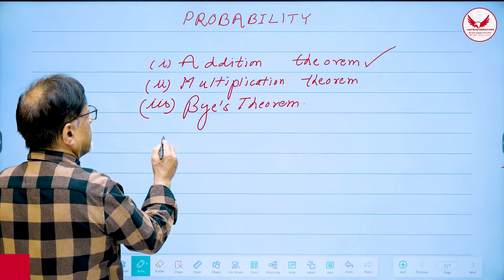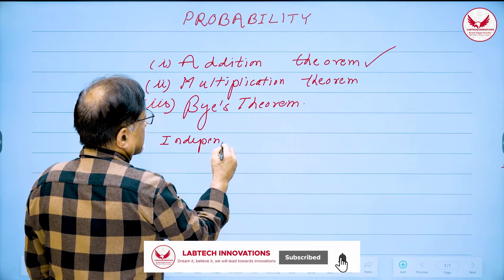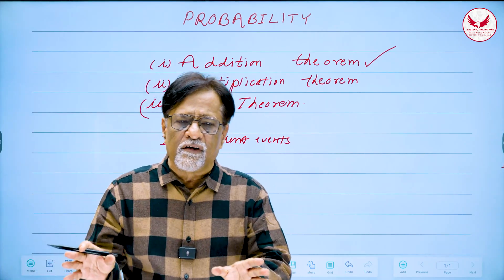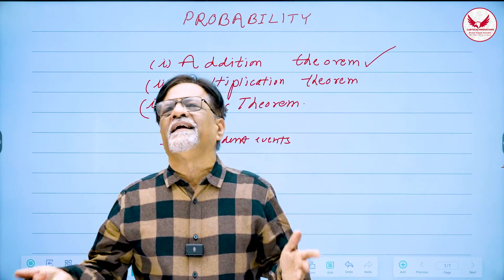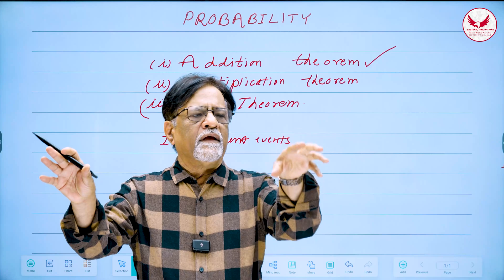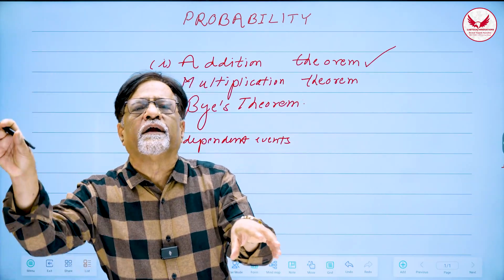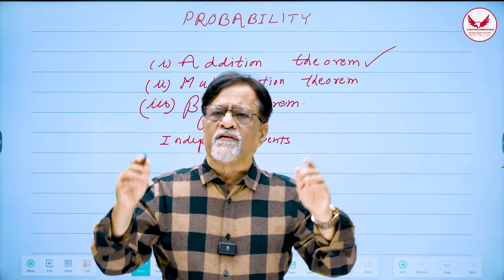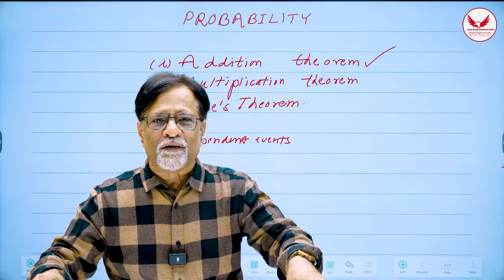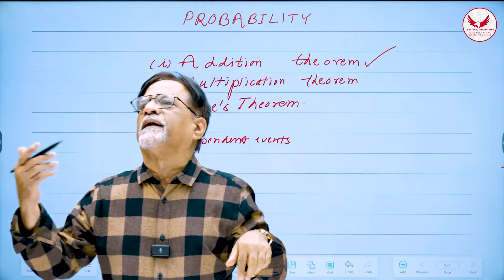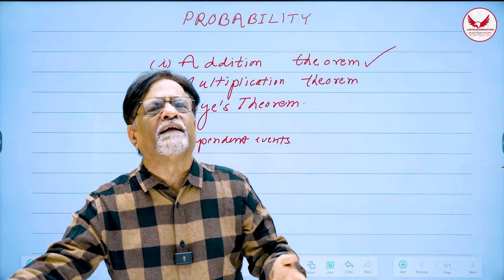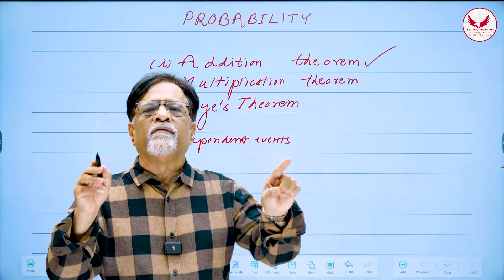Now there is a concept called independent events. Two events are called independent — as the word indicates — when these two events do not depend on each other. For example, two students appearing for an examination: whether student A passes or fails has no effect on whether B passes or fails, provided the exam is fair. So from common sense itself we know whether two events are dependent or independent.